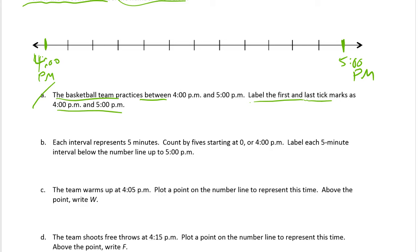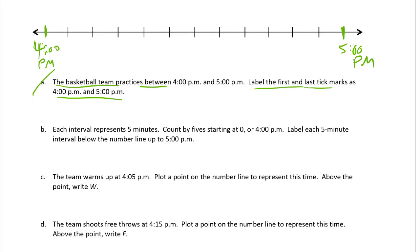B - you don't have to write over those I'm just making sure you see which ones I need. Each interval - interval is the space in between two tick marks. So each interval represents five minutes. Count by five starting at zero or at 4 p.m. and label each five minute interval below the number line up to five.